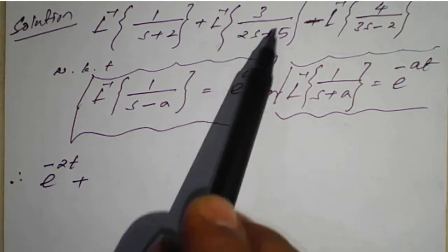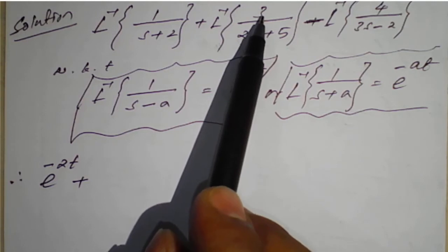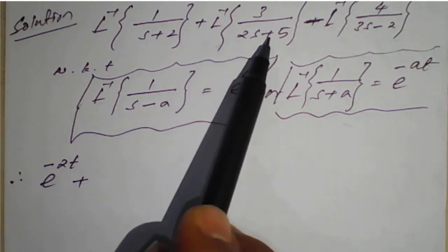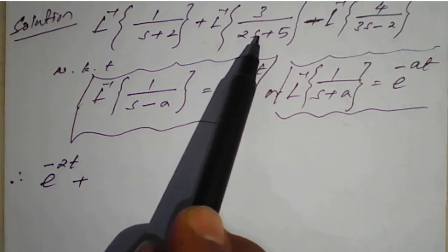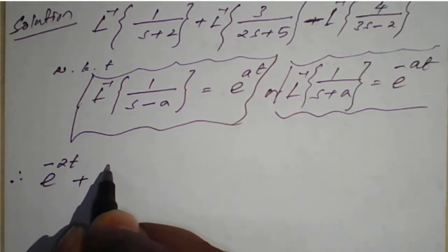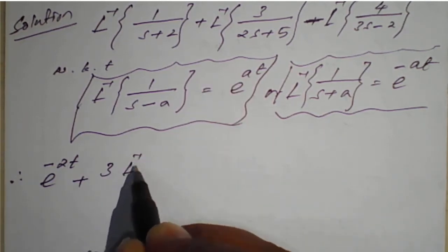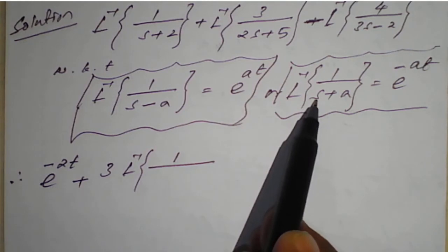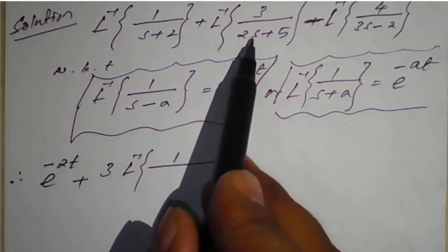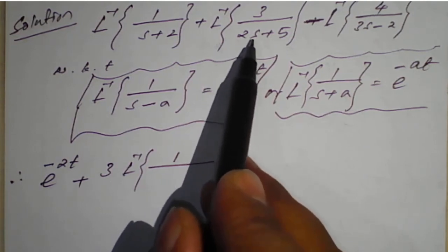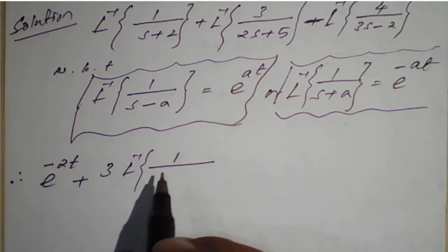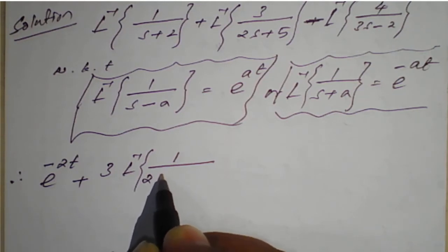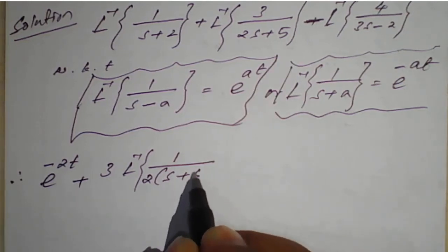For the second term, 3 upon 2s plus 5 is not in proper form — we need to rearrange. Taking 3 as a constant outside and taking 2 common from the denominator, it becomes 3 times L inverse of 1 upon 2 times (s plus 5 upon 2), which simplifies so that the coefficient of s becomes 1.